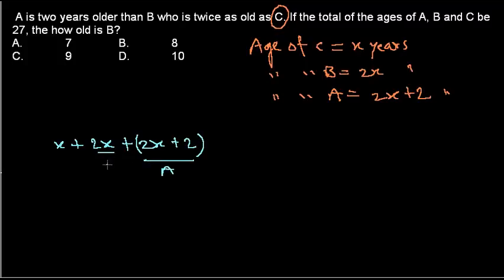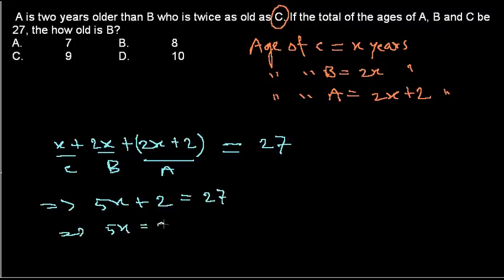And it equals to 27. So now it will be 5x plus 2 equals to 27, so 5x equals to 25. Now x equals to 5, because if we divide both sides by 5, we're left with x equals to 5.